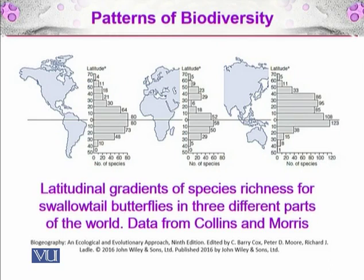In Oceania, between Australia and Asia, the tropical rainforests of Malaysia, Indonesia, New Guinea, and surrounding island archipelagos show much greater diversity and species richness of swallowtail butterflies. Overall, near the tropics there is much more biodiversity.